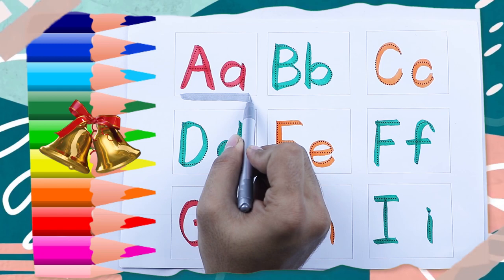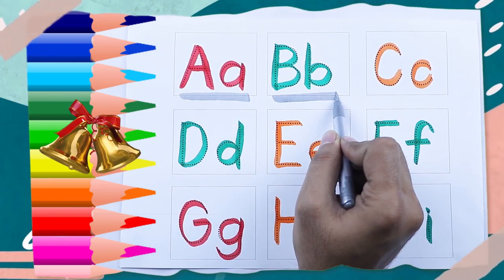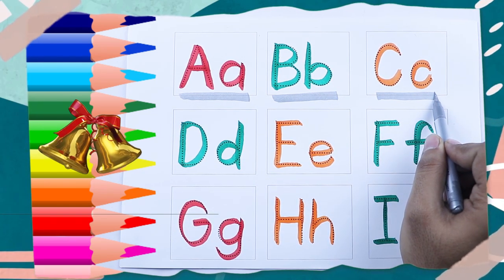It's red color A, A for apple, green color B, B for ball, orange color C, C for cat.